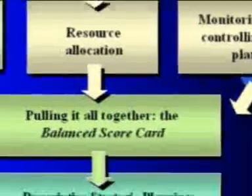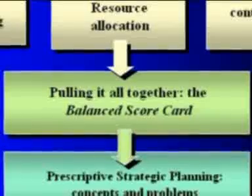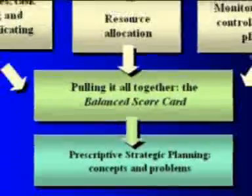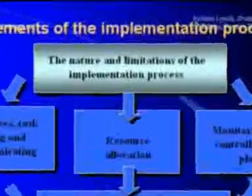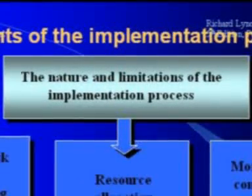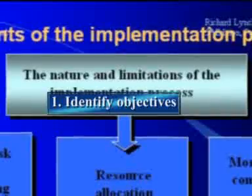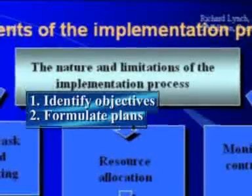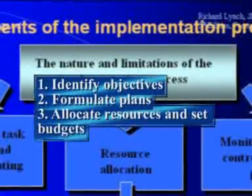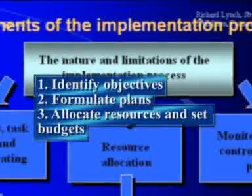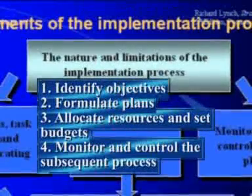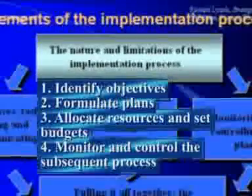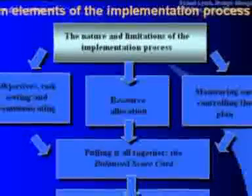It then moves on to consider the balanced scorecard, which pulls the whole thing together, before finishing with a section on prescriptive planning concepts and problems. The nature of the implementation process involves four basic elements: 1) identification of general strategic objectives; 2) formulation of specific plans; 3) resource allocation and budgeting in order to achieve the objectives; and 4) monitoring and control procedures — ensuring that the objectives are being met, that only the agreed resources are being spent, and that budgets are being adhered to.